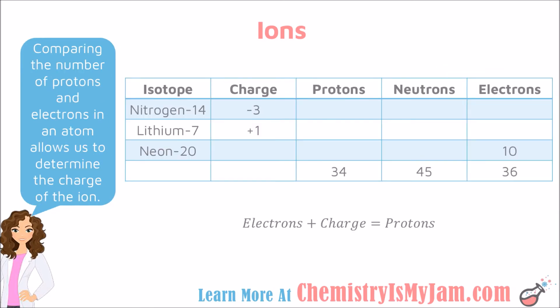Here is an example where we will be looking at some ions and determining the number of protons, neutrons, and electrons. Keep in mind that charge is based on the number of protons versus electrons. An ion that has more protons will have a positive charge, and an ion that has more electrons will have a negative charge.